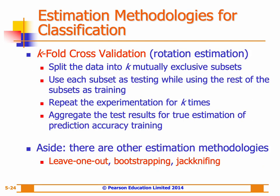Another common data splitting strategy is k-fold cross-validation, which overcomes bias introduced by random sampling in the simple split strategy. It randomly splits the data into k mutually exclusive subsets of approximately equal size, uses each subset as a test set while using the rest for training, and repeats this k times. The test results are aggregated to evaluate the overall prediction accuracy. Other strategies include leave-one-out, bootstrapping, and jackknifing, which can be found in the textbook.